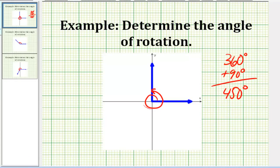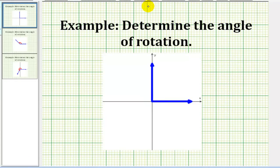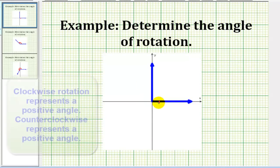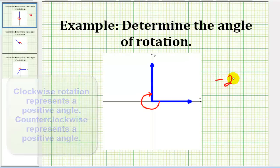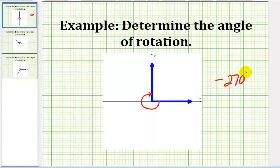And if the rotation is clockwise — for example, if this was our angle — this would be a negative angle. So if we rotate from here to here, that would be negative 180, and then another negative 90. So this angle would be negative 270 degrees.